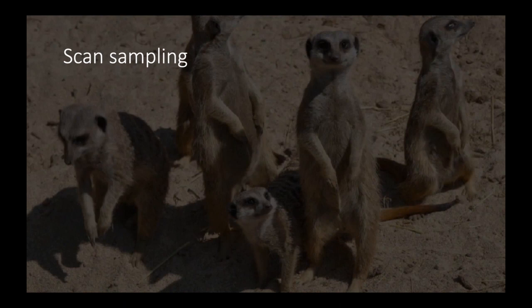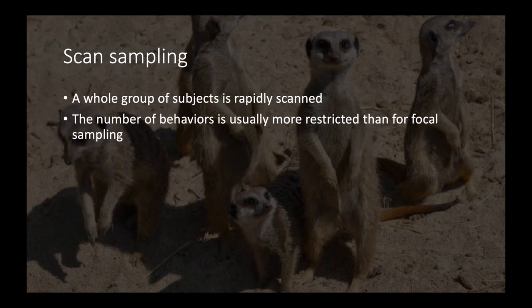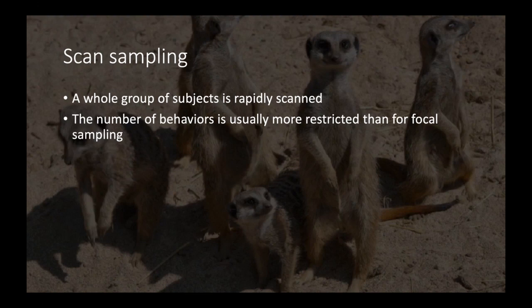For scan sampling, you will look at the behavior of a whole group of individuals or subjects at specific time intervals. The number of behaviors recorded is generally much more restricted than for focal sampling. For the example we're going to be doing, the ethogram consists of vigilant, not vigilant, or out of sight — a much more simplistic ethogram.